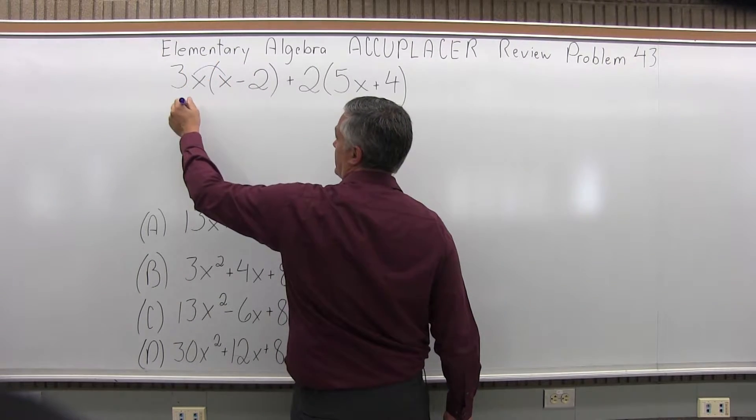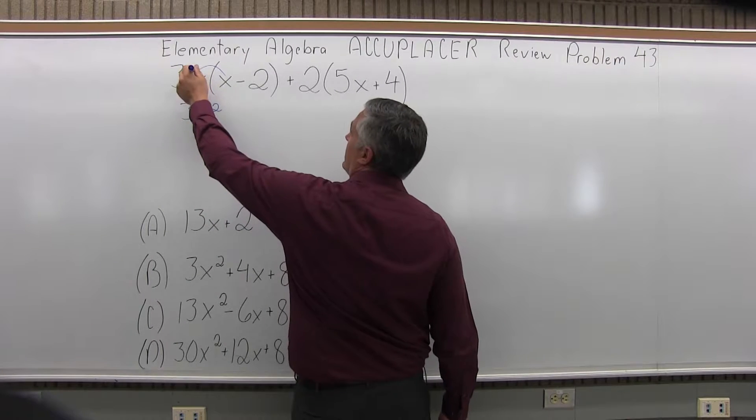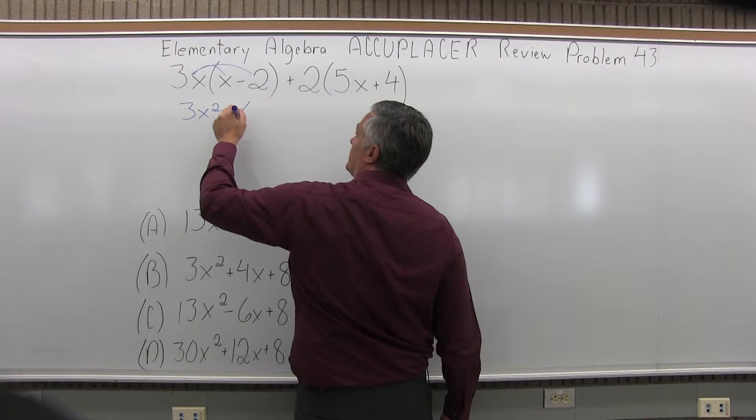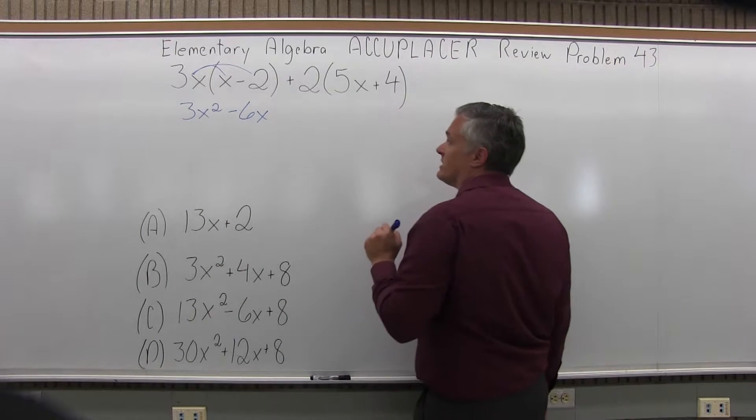So we start with 3x times x, which will be 3x to the second. And then 3x times minus 2, which will be negative 6x. So that takes care of the first parentheses.